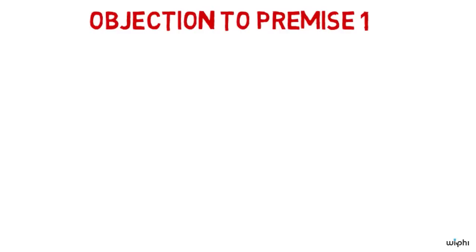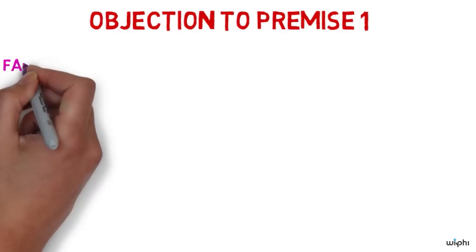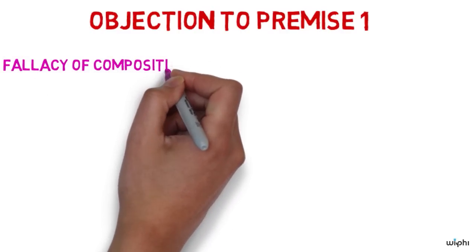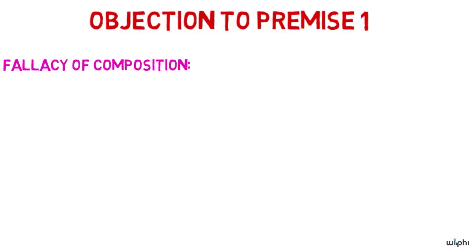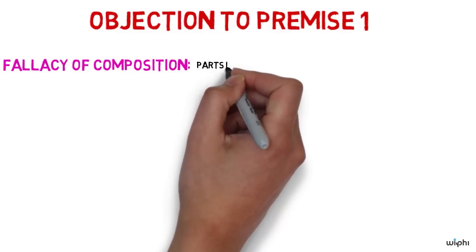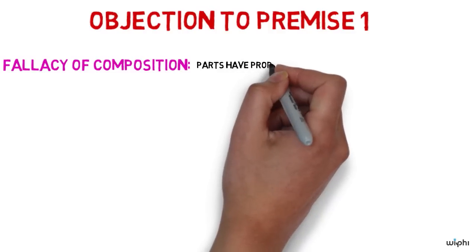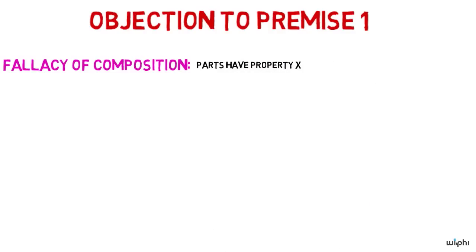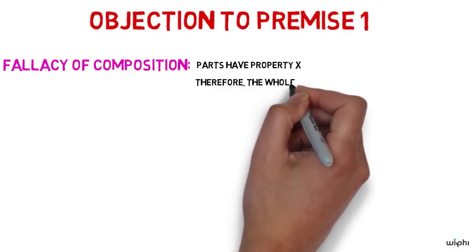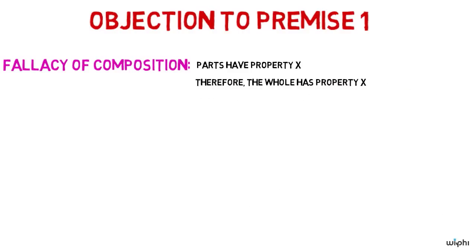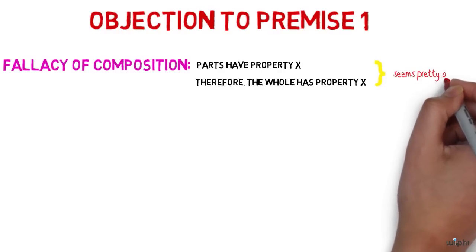A second way to put this objection is by saying that there is a fallacy of composition going on. A fallacy of composition is saying that because the parts of an object all have a property, then so must the whole. It's a fallacy because while it seems attractive, it's not a reliable argument.